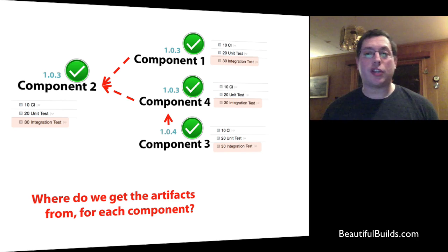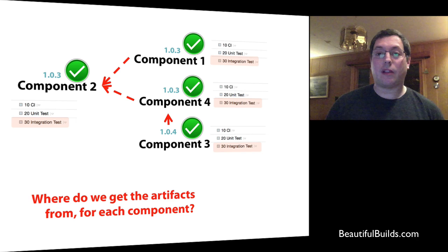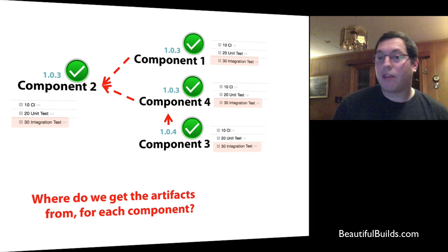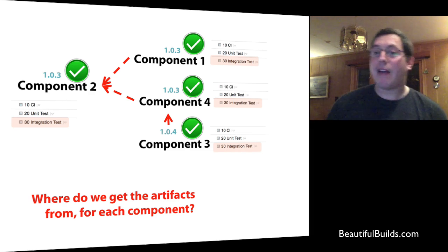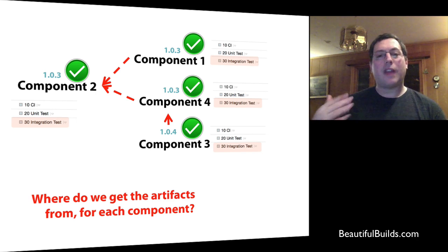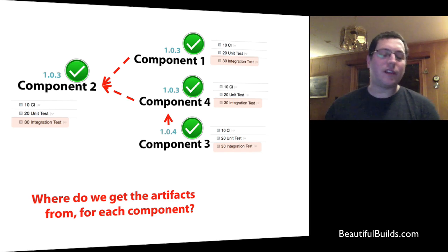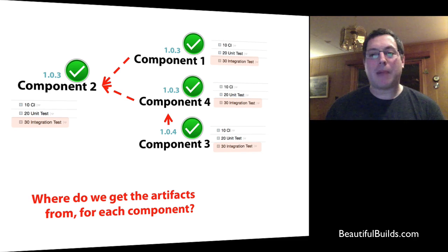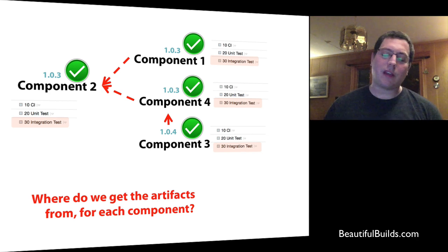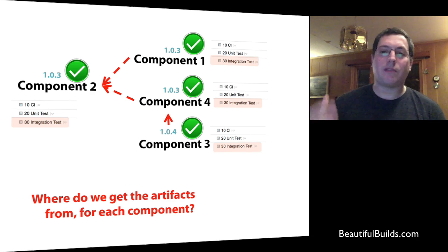Some components might have automated installer tests, configuration management, code generation, or publication to various locations. So the pipelines might have more than three steps for some components and fewer for others. Some might not have unit tests; some might not have integration tests. There is no single way of knowing which location in the flow we should get the binaries from. It makes sense that it's the last step, but sometimes it's not.